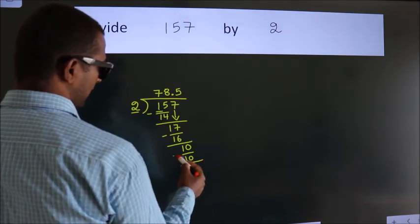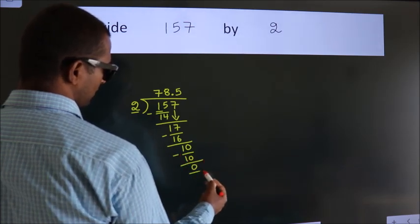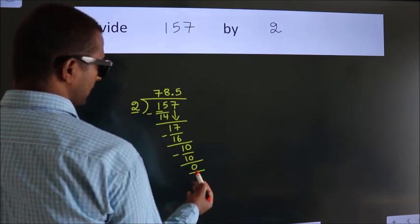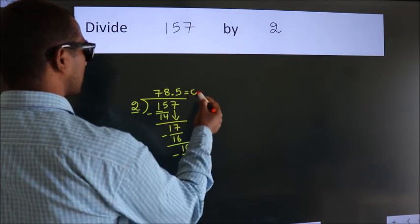Now we subtract. We get 0. We got remainder 0. So this is our quotient.